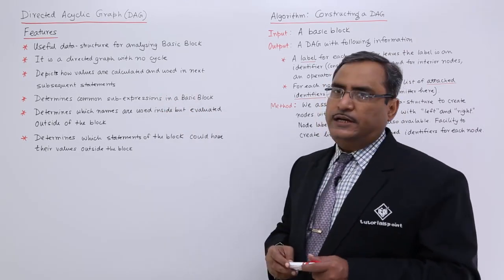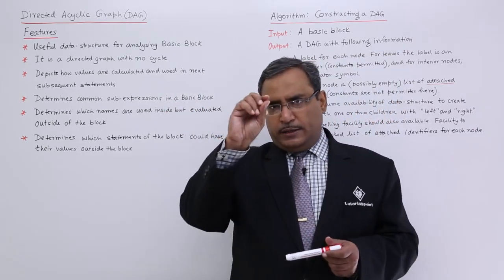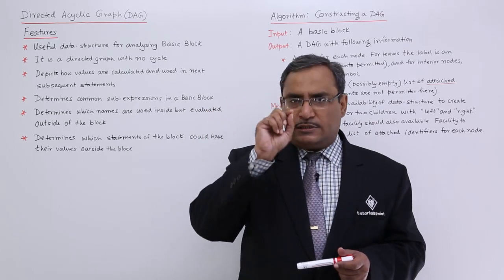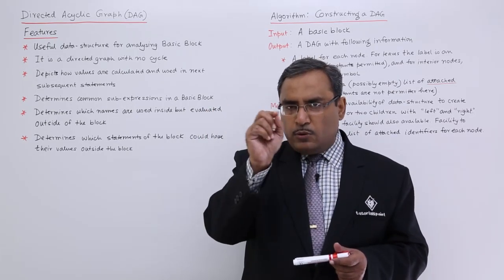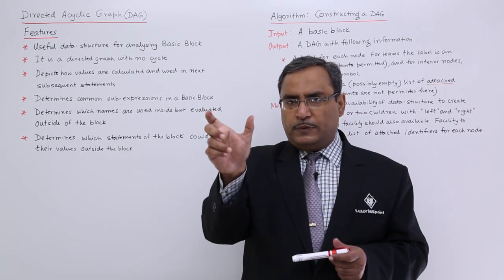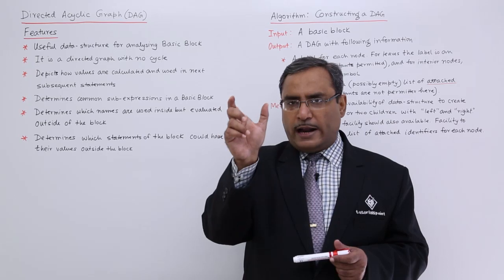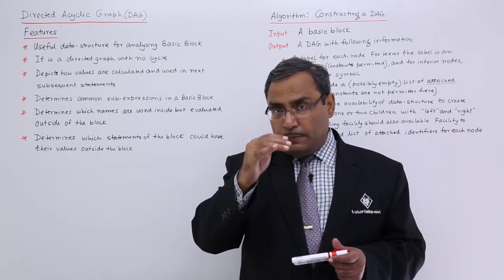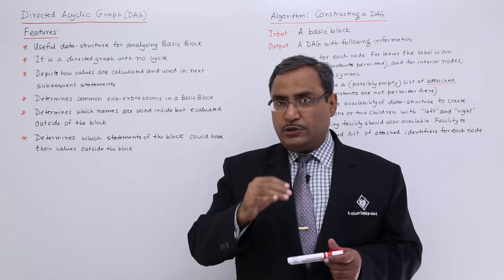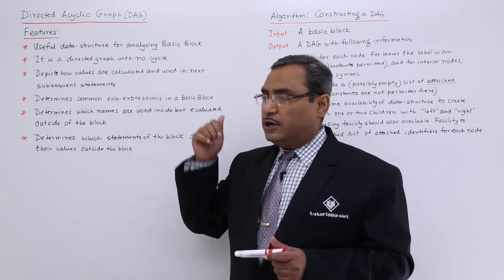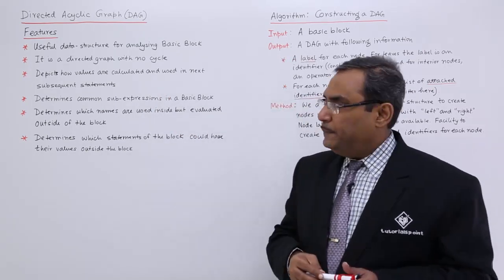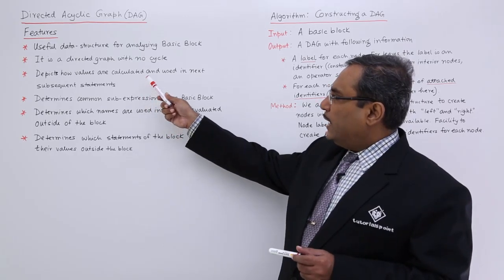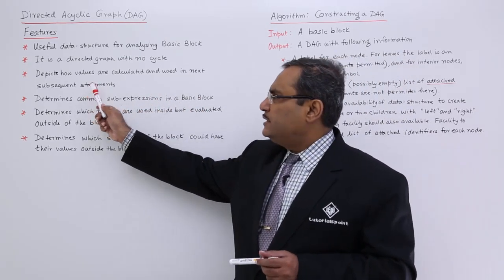DAG depicts how values are calculated and used in subsequent statements. That means if there is an i-th statement where a value has been calculated from the expression on the right-hand side and the left-hand side has got some value, how this value can be used in the latter subsequent instructions — that can be depicted here.